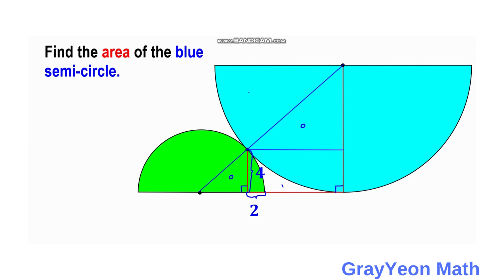First, we attack this problem by getting the dimensions of the green semi-circle. We find the radius of this green semi-circle, and then we can get the radius of the blue semi-circle by using the similarity of these triangles. The radius of the green semi-circle is unknown, so we label it R. We are given a distance of 2 units from the edge, so the remaining horizontal leg is R minus 2, and the vertical leg is 4.